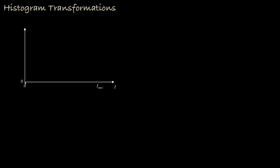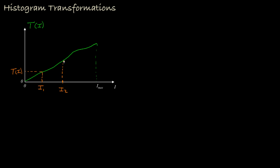Here's an example of an intensity transformation that has an important mathematical property. This transformation transforms intensities over the interval from zero to the maximum intensity, and it has the property that it never decreases. That is, if we look at this transformation as a function of intensity, and if one particular intensity, say I1, is smaller than I2, then the transformation of I1 will be smaller than the transformation of I2.